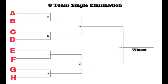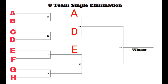So we have Team A, B, C, D, E, F, G, and H. In the first game, Team A won against Team B. In the second game, Team D won against Team C. In the third game, Team E won against Team F. And in the fourth game, Team G won against Team H.